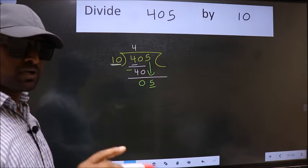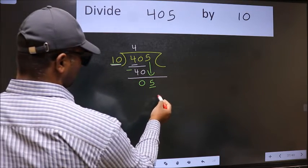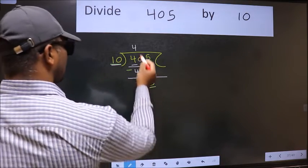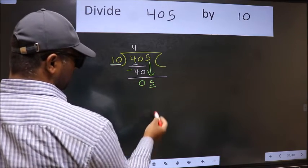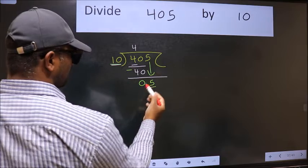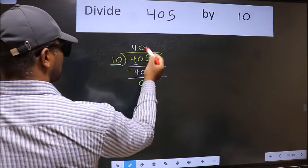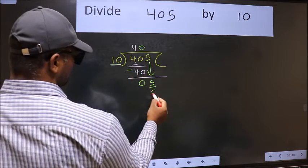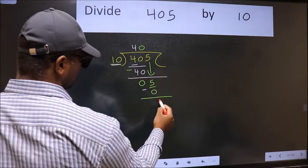Instead of that, what you should think of doing is, which number should we take here. If I take 1, we will get 10. But 10 is larger than 5. So what we should do is, we should take 0. 10 into 0. Now we should subtract. We get 5.